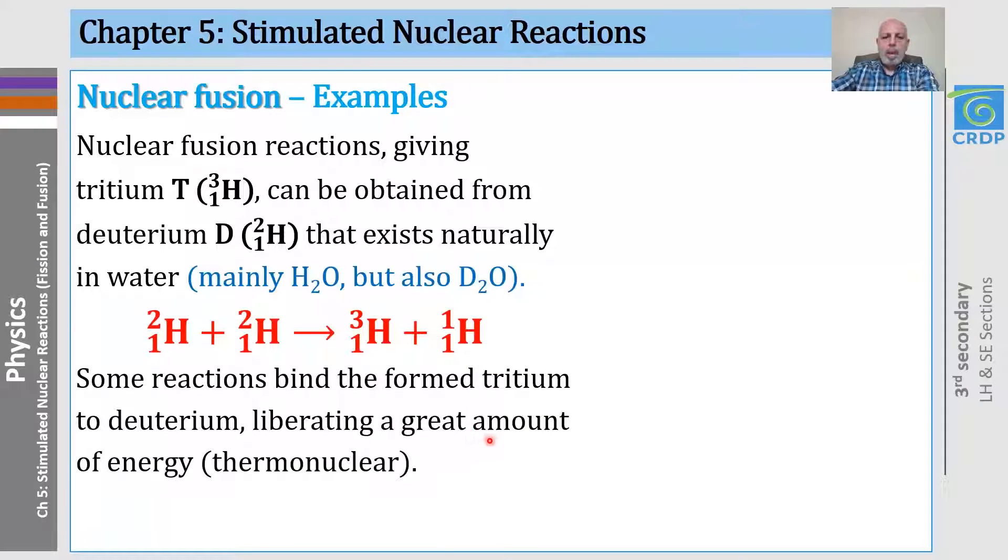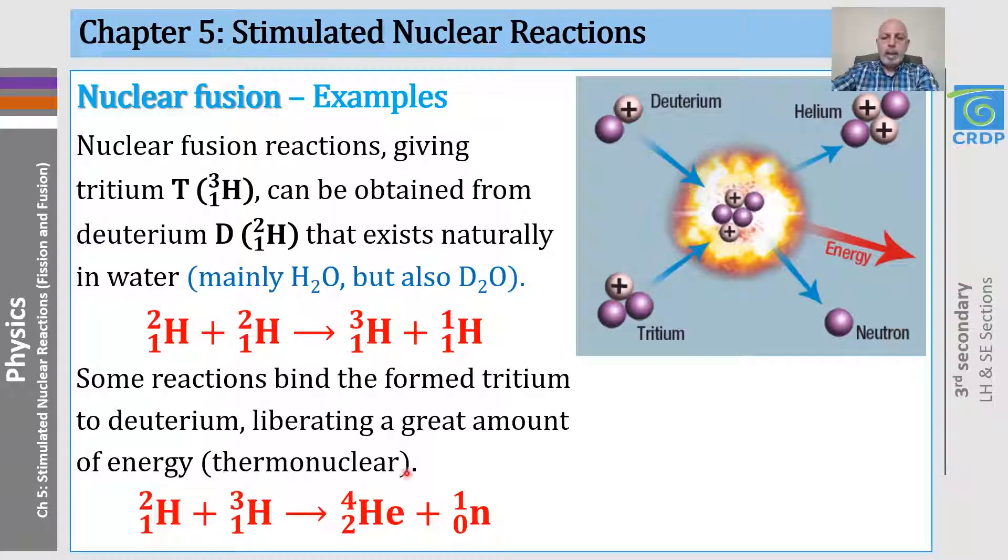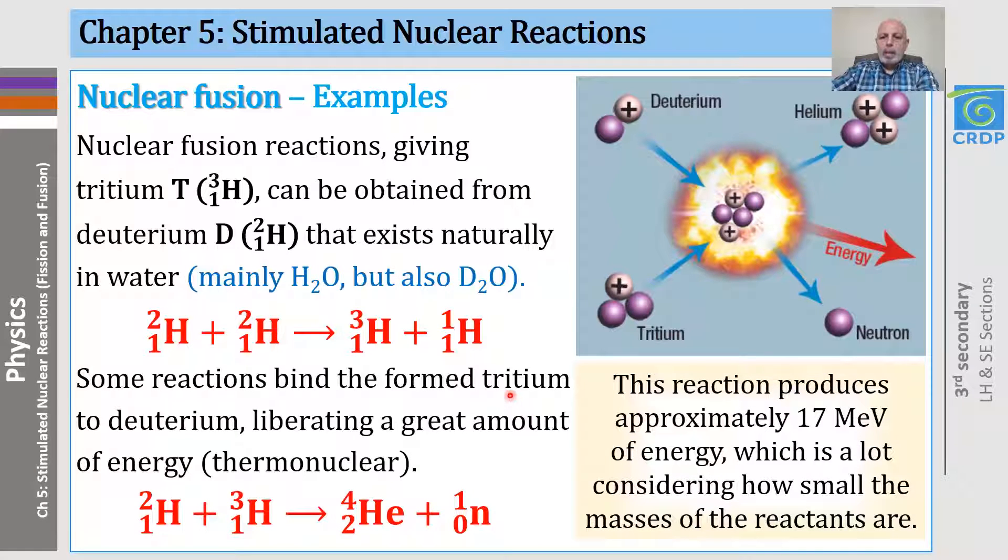Now, some reactions bind the form tritium to a deuterium nucleus liberating a great amount of energy, and this is the corresponding equation in which we can see the helium-2,4 as a product with the neutron. And this figure represents the same reaction. This reaction produces approximately 17 mega electron volts, which is a huge amount of energy considering how small the masses of the reactants are.